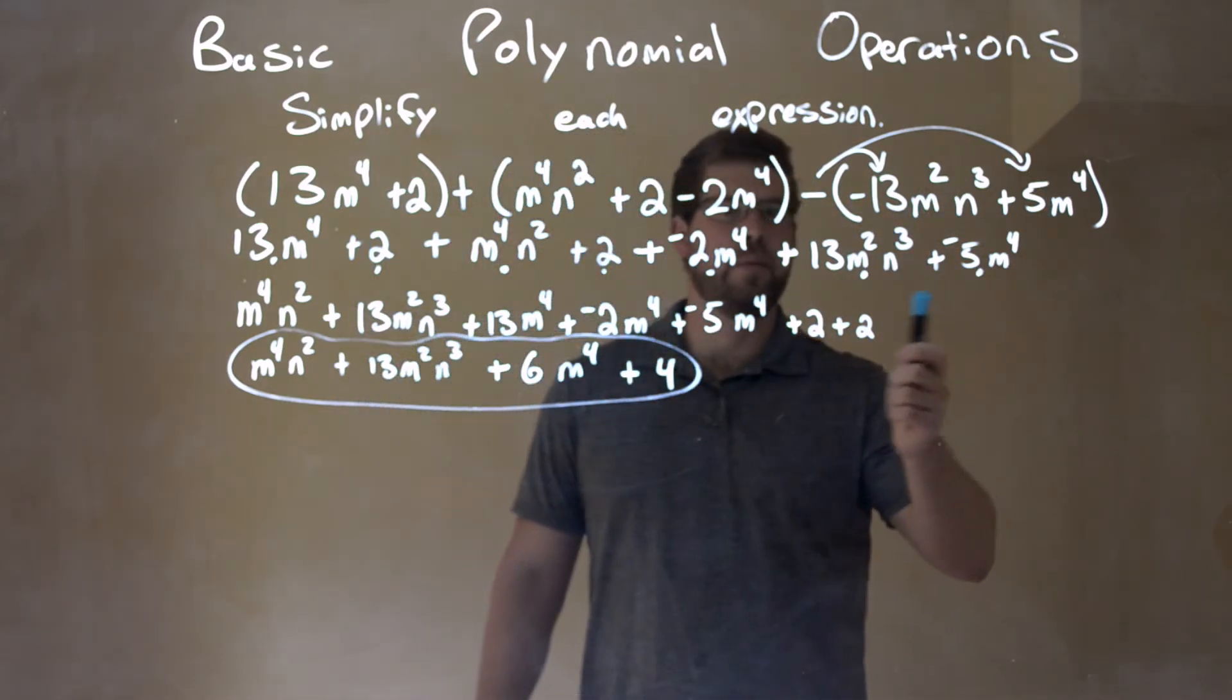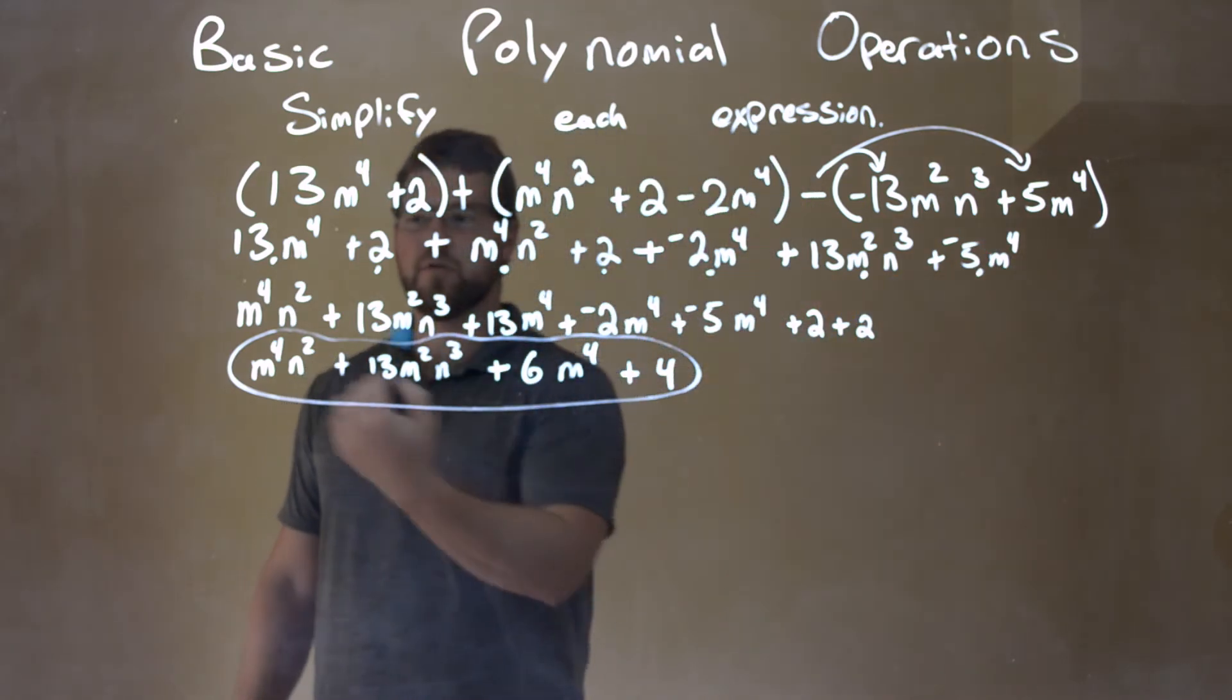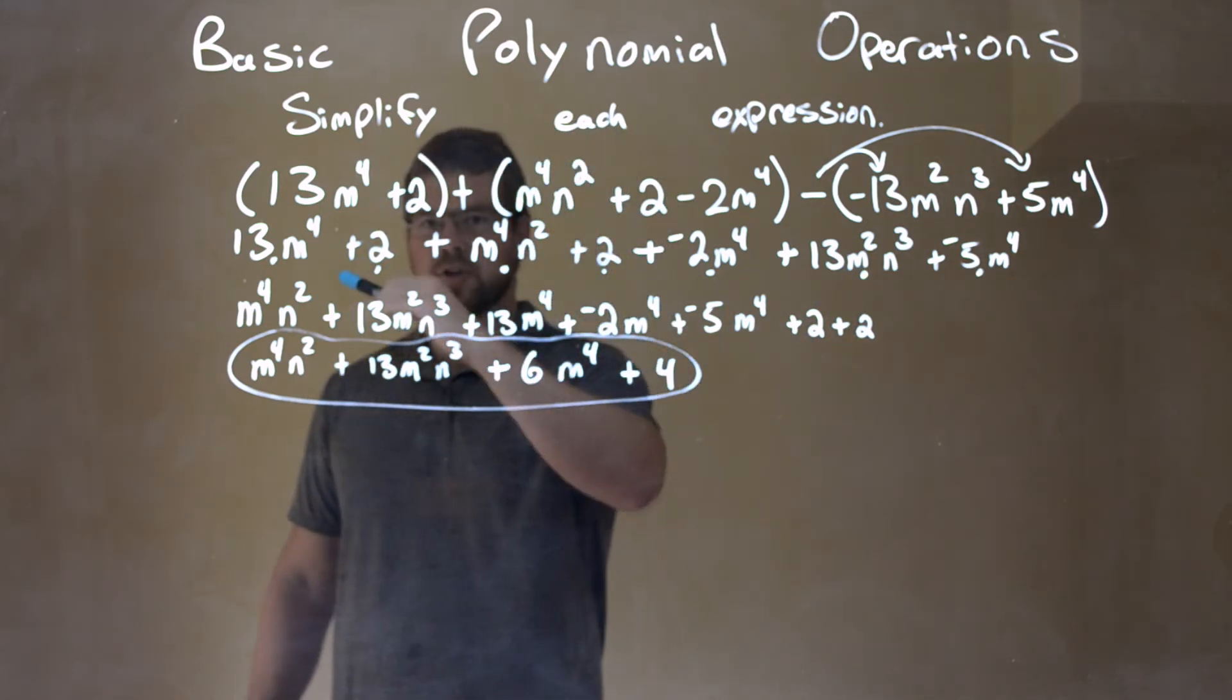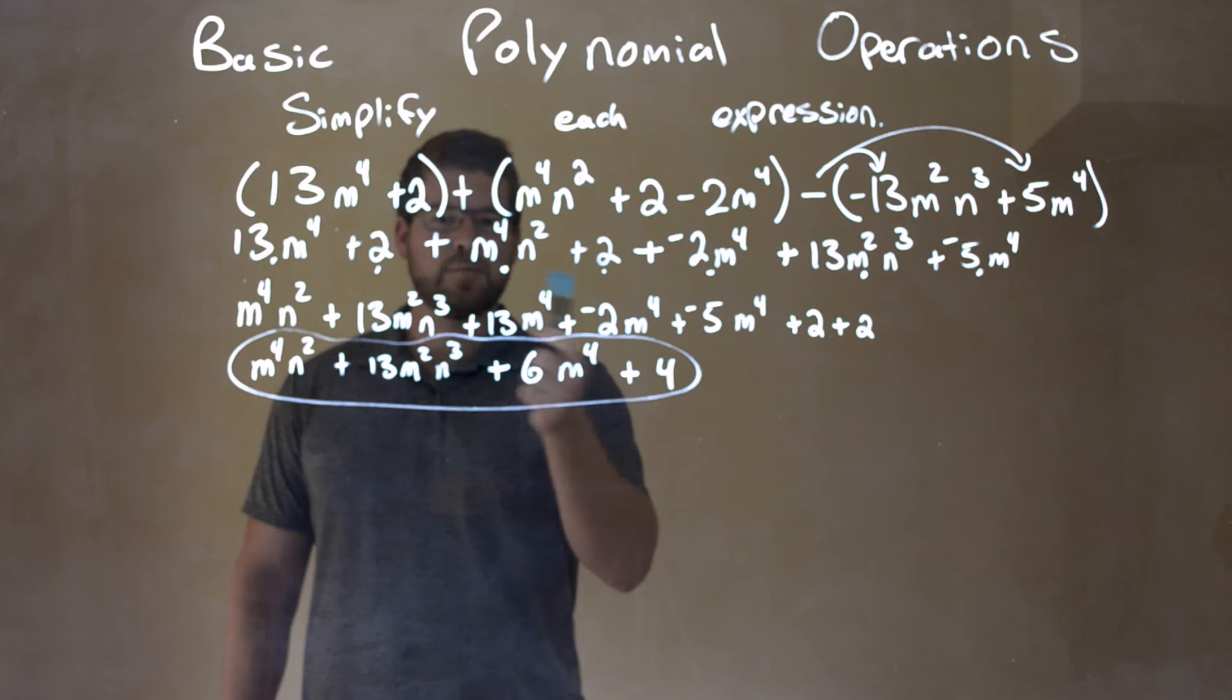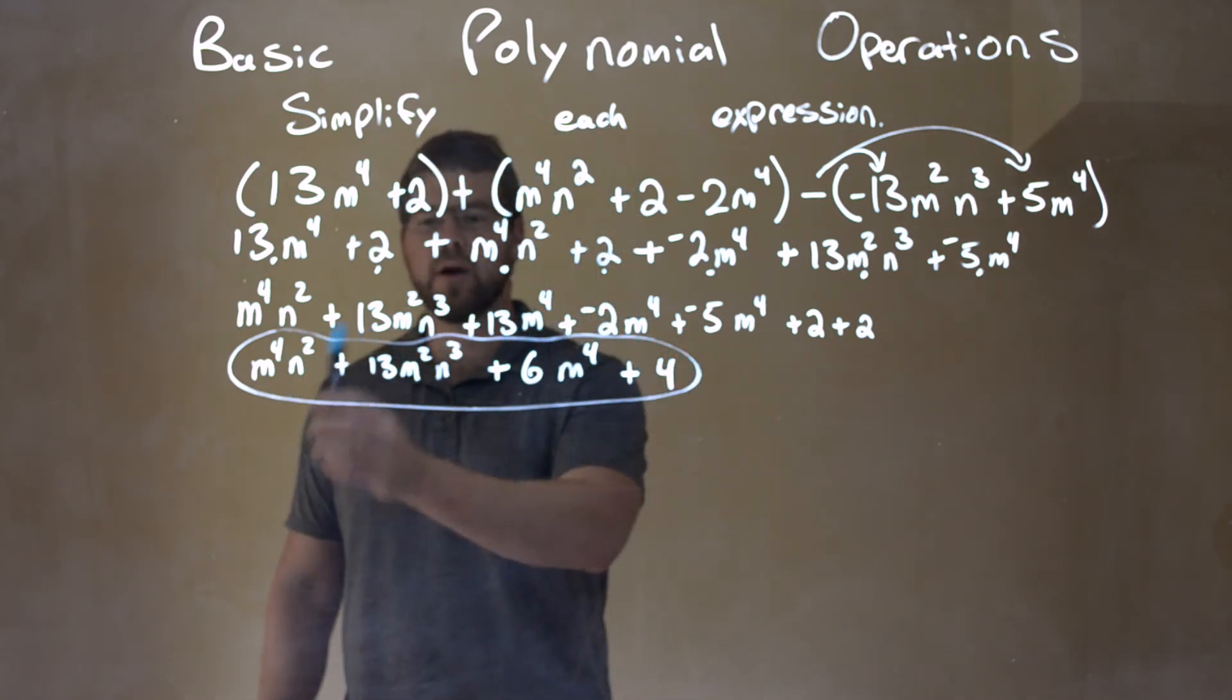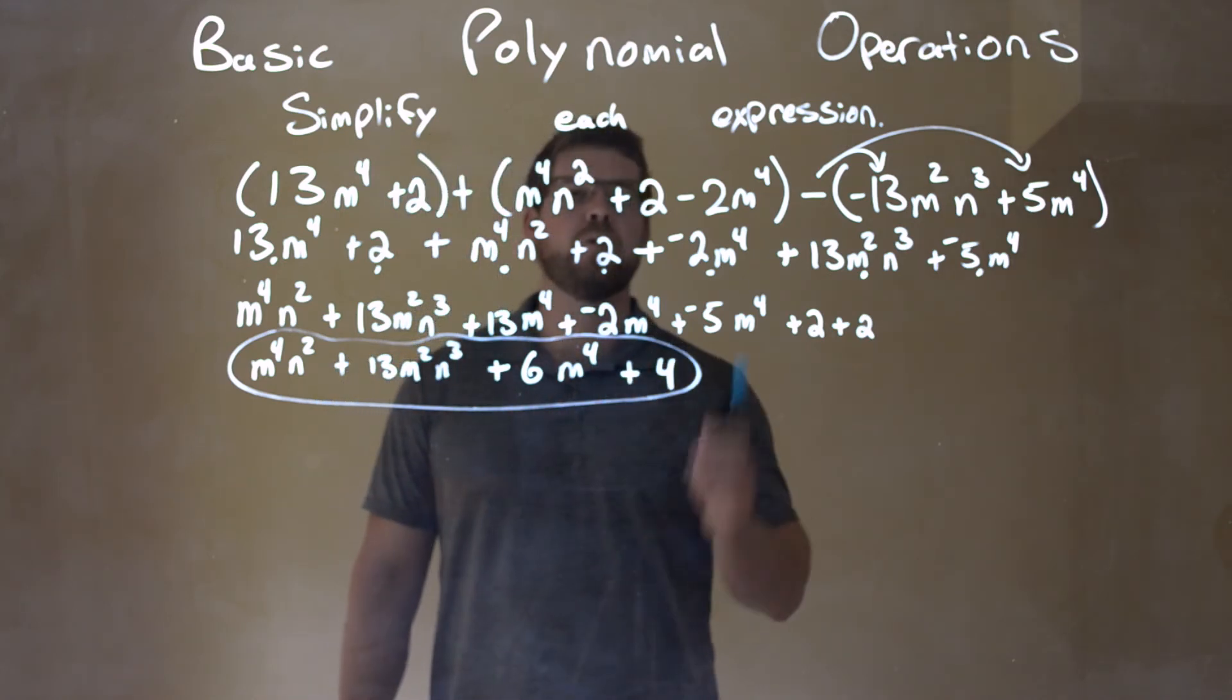I then distributed the subtraction sign across this last one here and got rid of all my parentheses. It made it all an addition problem. All my subtractions became plus and negative. Then I rearranged it to have my highest degrees first, using my dot method to make sure I brought every term down. Then I simplified and combined my like terms to get our final answer of m to the fourth n squared plus 13m squared n to the third plus 6m to the fourth plus 4.